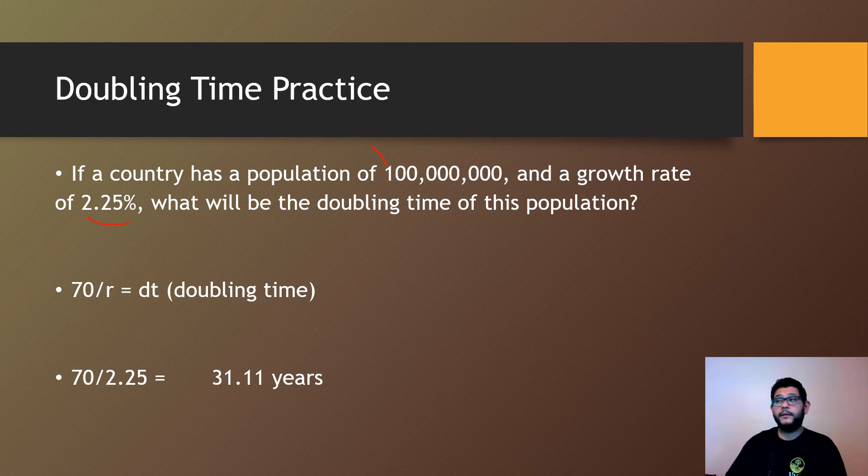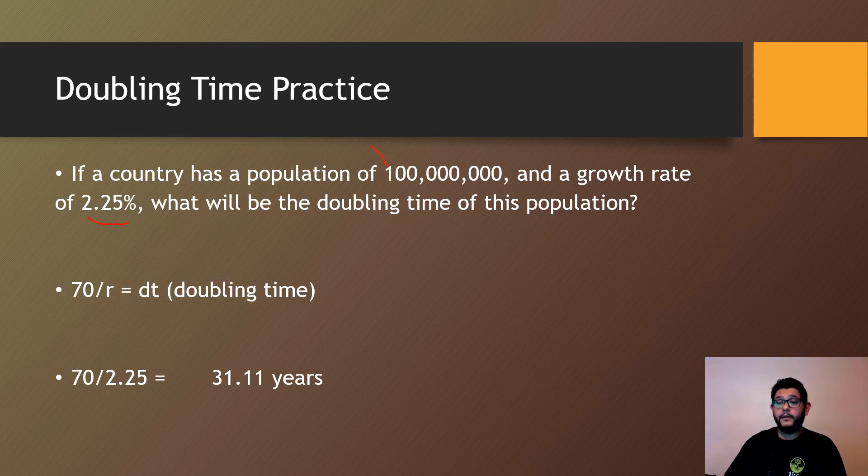The population could be 100 million, could be 2 million, could be 10,000, could be 8. It doesn't matter. As long as the growth rate percentage is given, you can just figure that part out using that equation. So there you go.